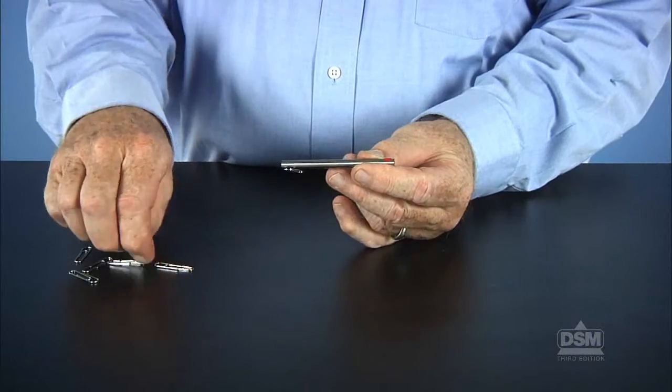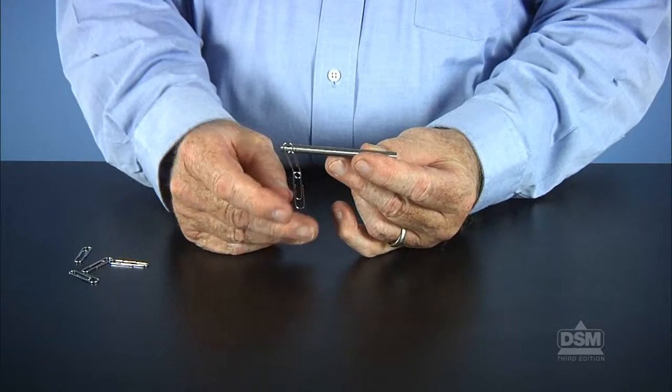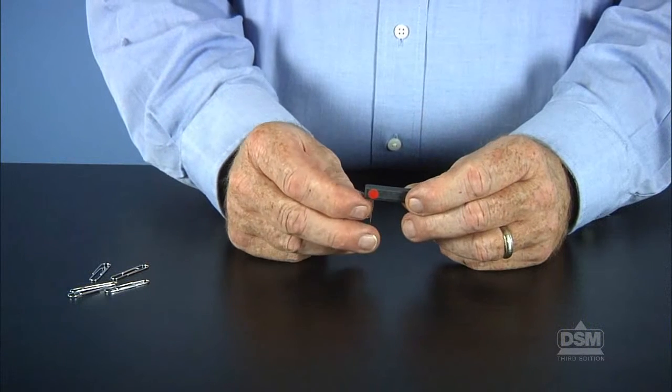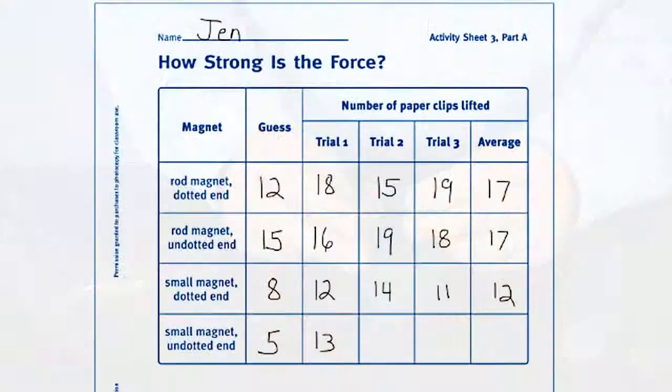Tell the students to repeat the procedure using the undotted end of the rod magnet and record their results. After the students have recorded the results for the rod magnet, ask them to repeat the procedure with the small magnet.